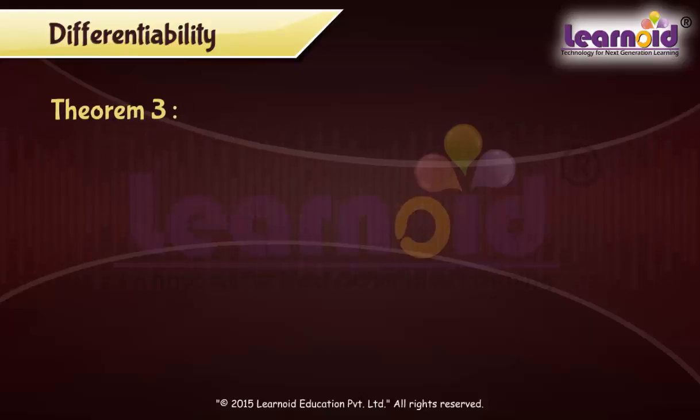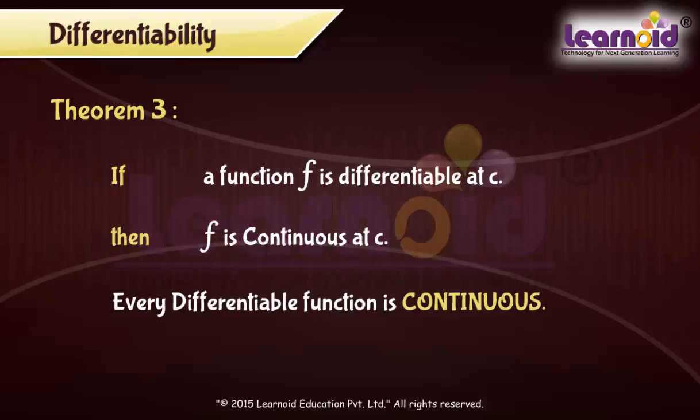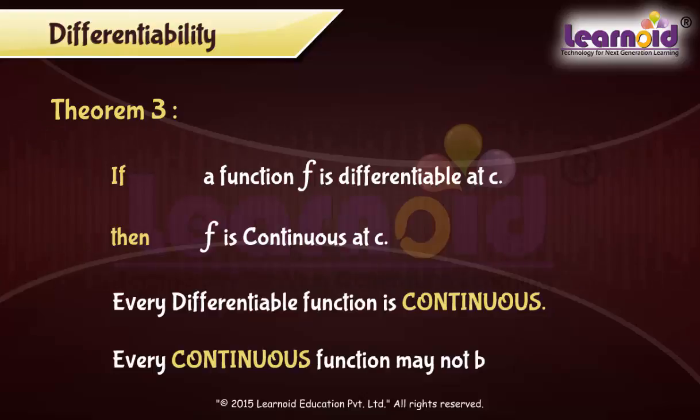Theorem 3 states that if a function f is differentiable at a point c, then it is also continuous at point c. Every differentiable function is continuous, but the converse of this may not be true. Every continuous function may not be differentiable.